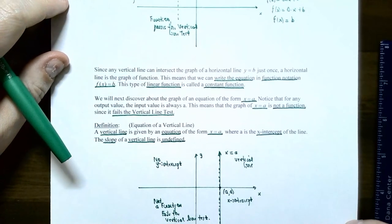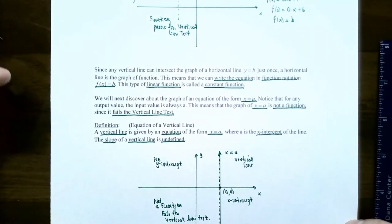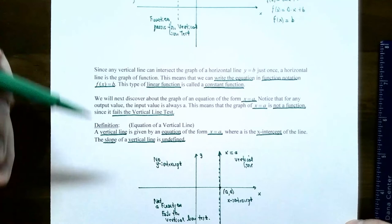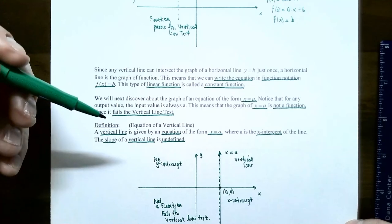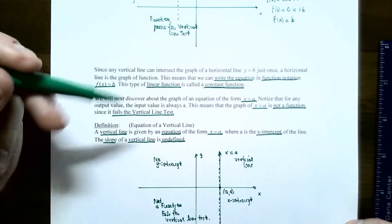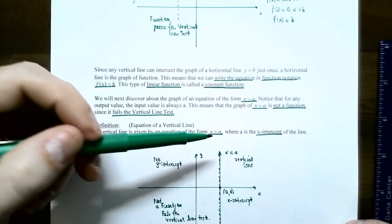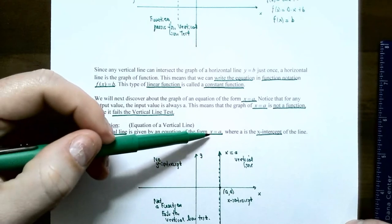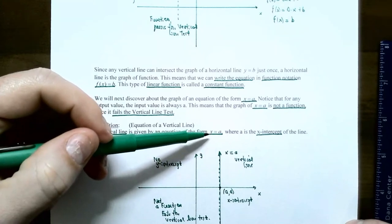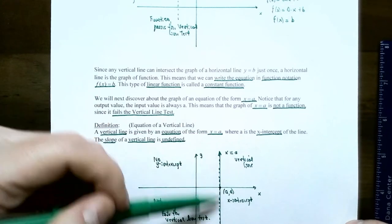We cannot use y equals mx plus b to represent a vertical line. A vertical line has its own unique equation, always x equals a, because the x value does not change.